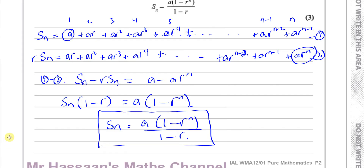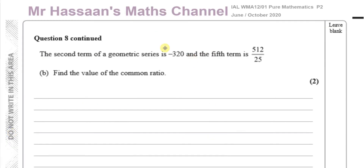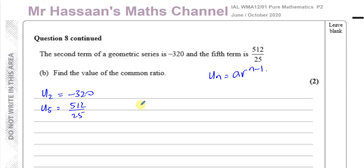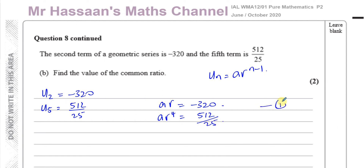For part B, we're told the second term of the geometric series is −320 and the fifth term is 512/25. The nth term is AR^(n-1), so the second term gives AR = −320 (equation 1), and the fifth term gives AR⁴ = 512/25 (equation 2). I want to find the common ratio.